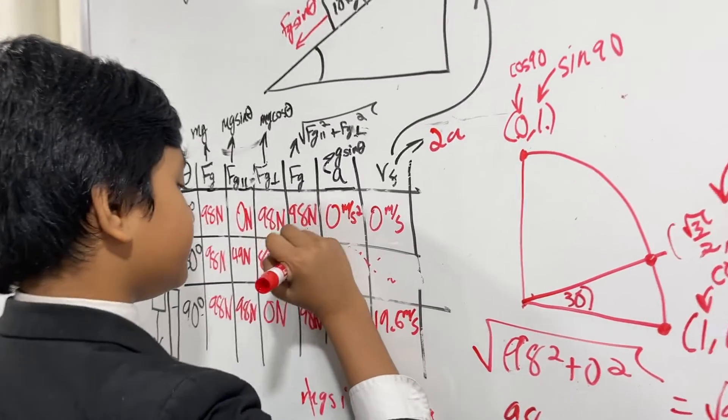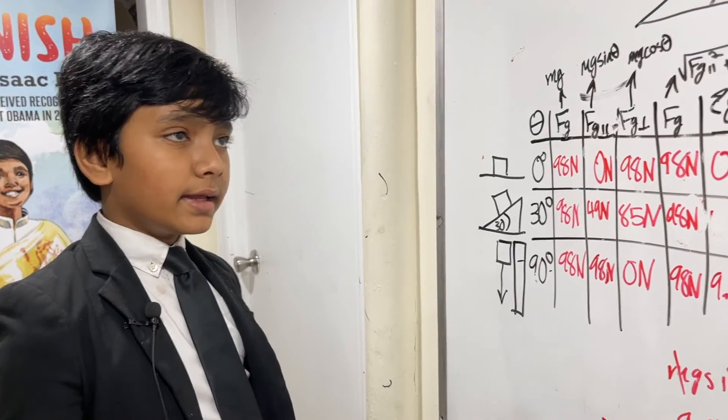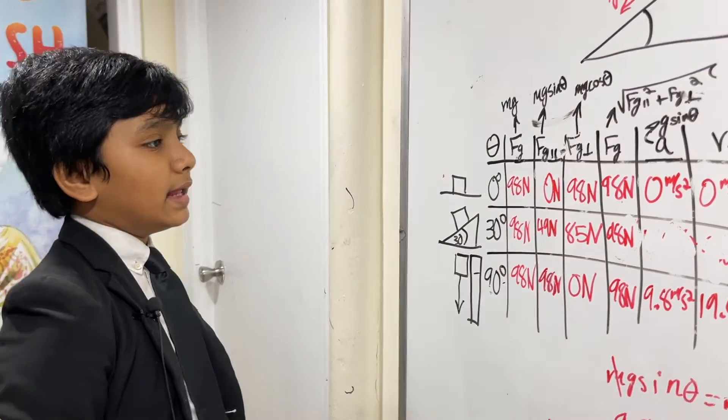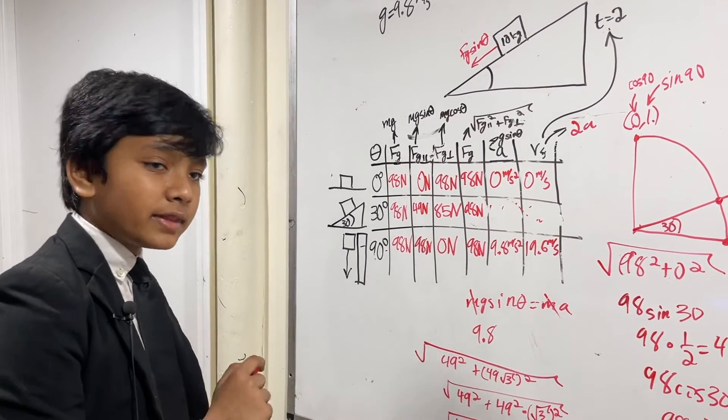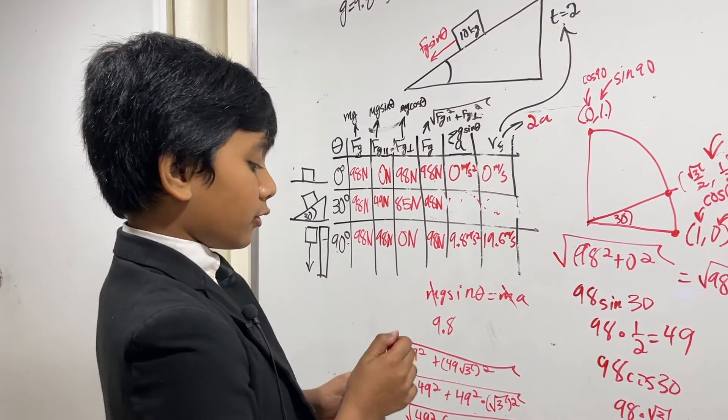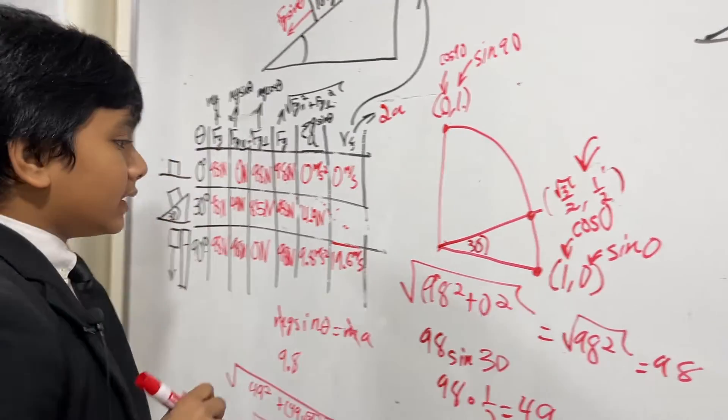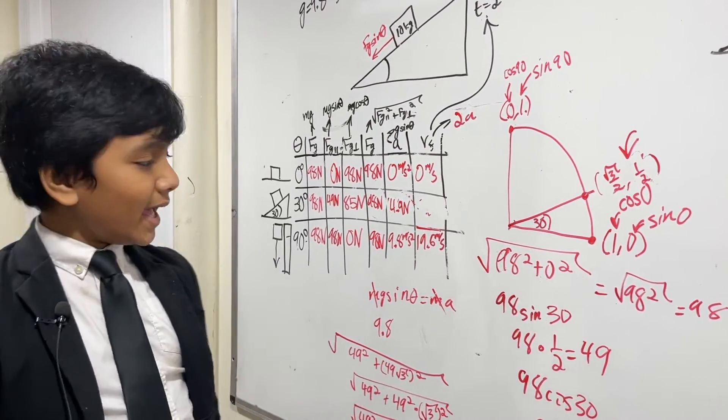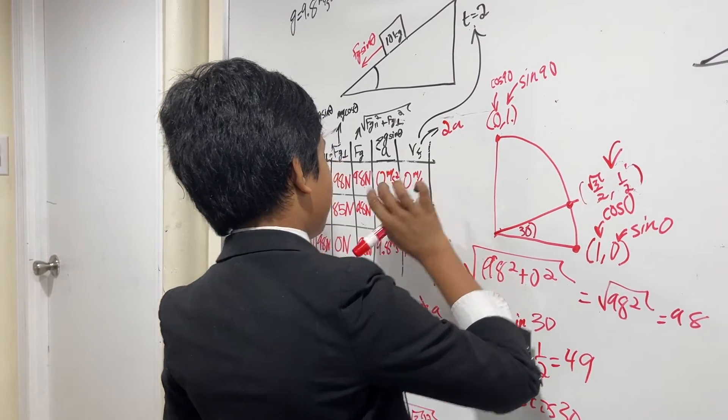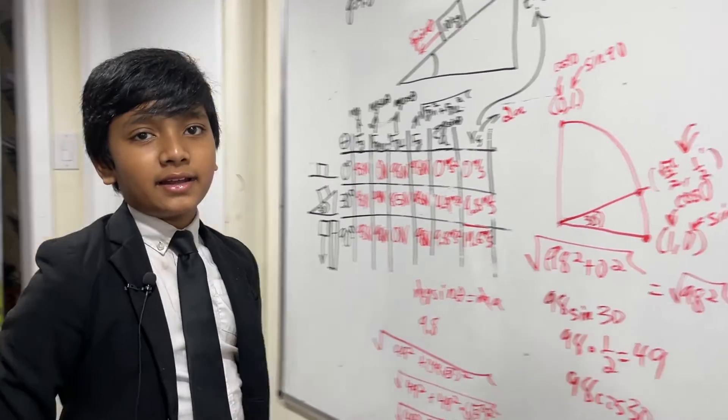So now the acceleration we know is simply g sine theta. So that means that it's literally FG parallel over M. And we know M is 10, so it's FG parallel over 10. FG parallel is 49, 49 over 10 is 4.9. And finally we have VF. And we know the VF is just 2 times A, so it's 9.8. Wait, did I put newtons here? I am a stupid. 9.8 meters per second. That's it for the non-friction part.